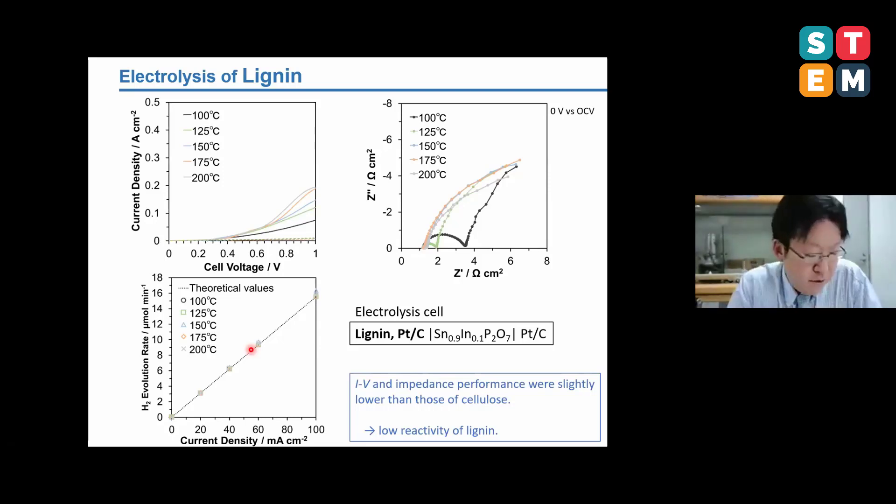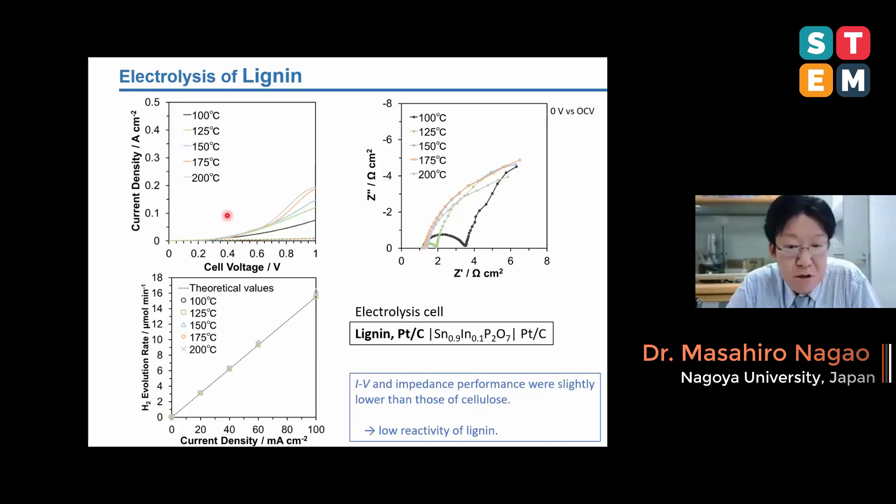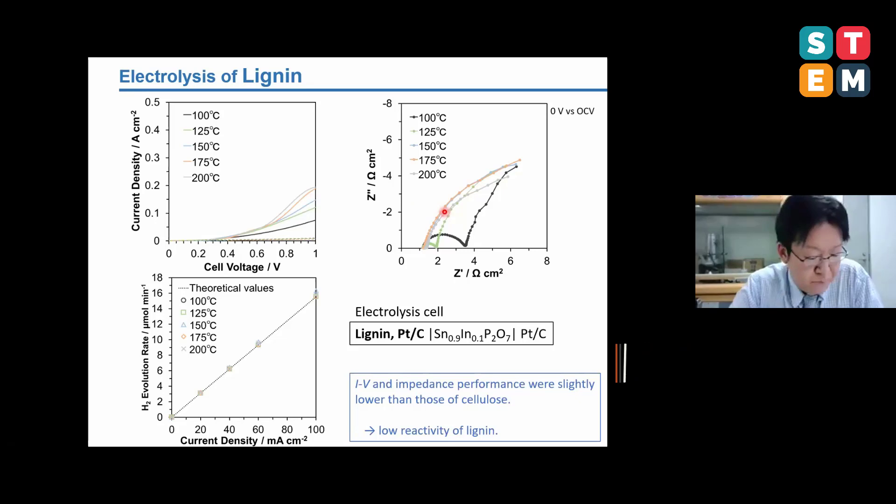These results show the electrochemical performance using lignin as a biomass. IV and impedance performance were slightly lower than those of cellulose. This will reflect the low reactivity of lignin. So cellulose is preferable for electrolysis.